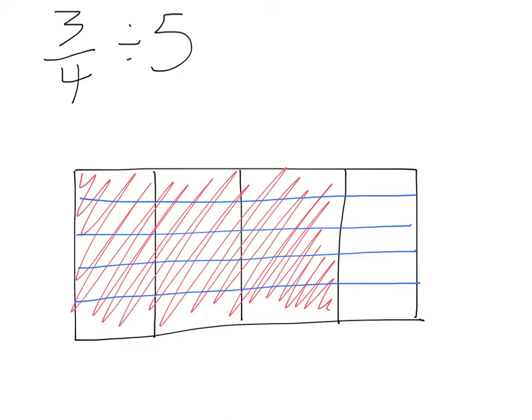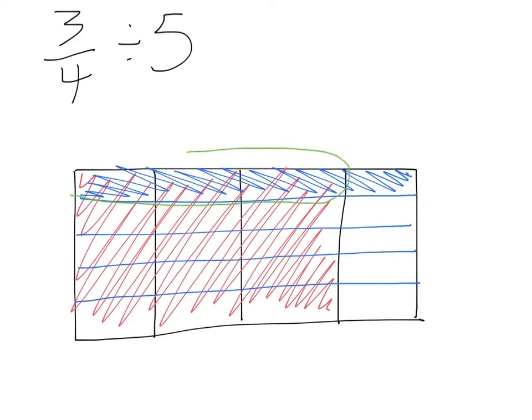I'm going to shade in one of these five rows. To find my answer, I'm looking for what overlaps. I see that these three are overlapping. So three-fourths divided by five is going to be three out of how many? Well, I have five down and four across. So that's three out of 20.